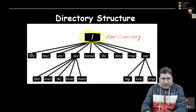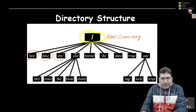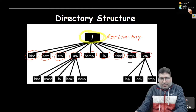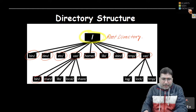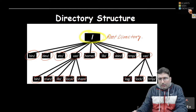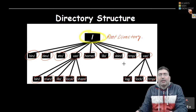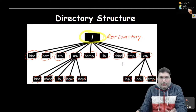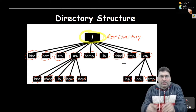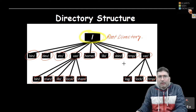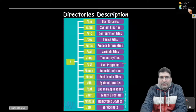Inside the root directory there are different directories like bin, dev, etc, usr, home, lib, sbin, tmp, and others. Inside usr there are also important directories like bin, man, lib, local, and share. Inside var there are logs, tmp, and other directories. One or two directories may vary depending on the Linux flavor, but most of these directories are available in all Linux distributions.